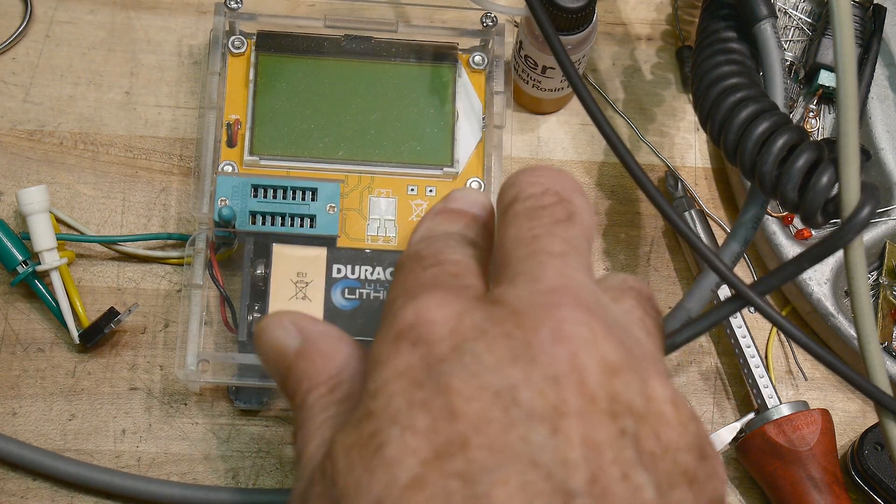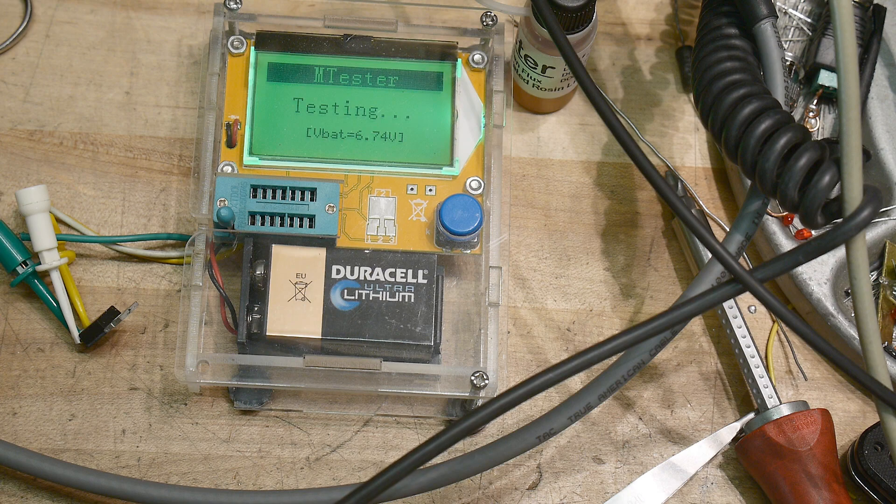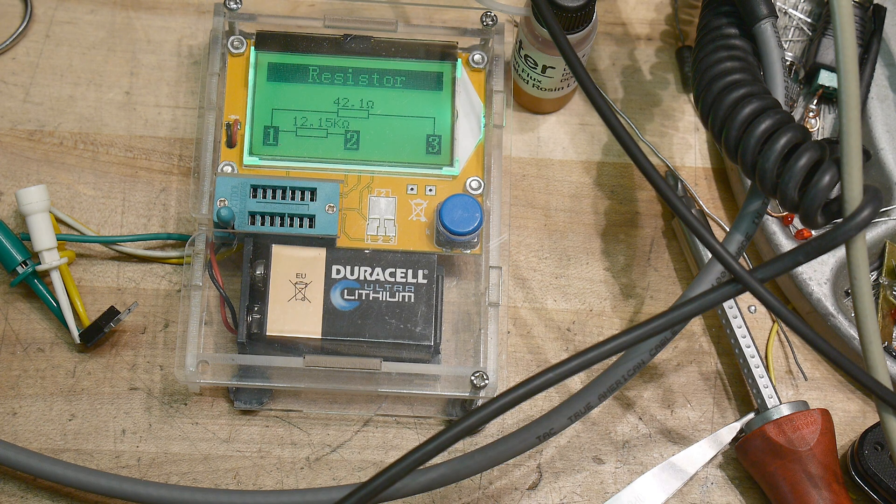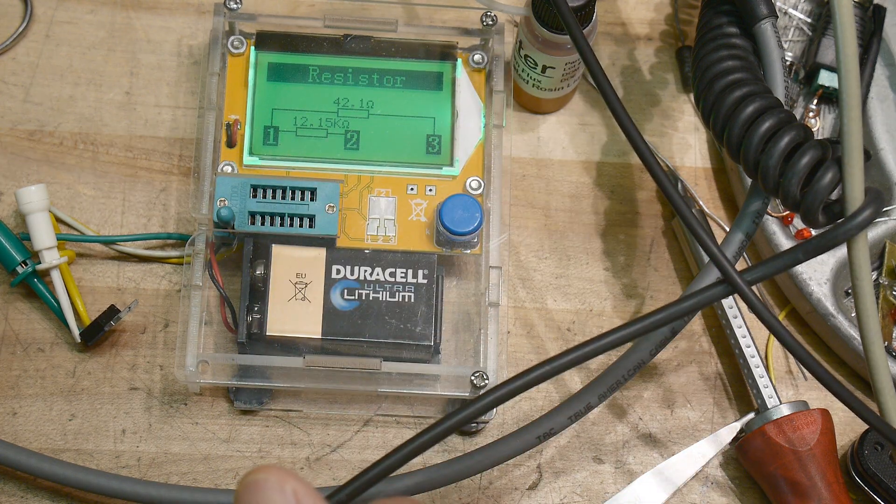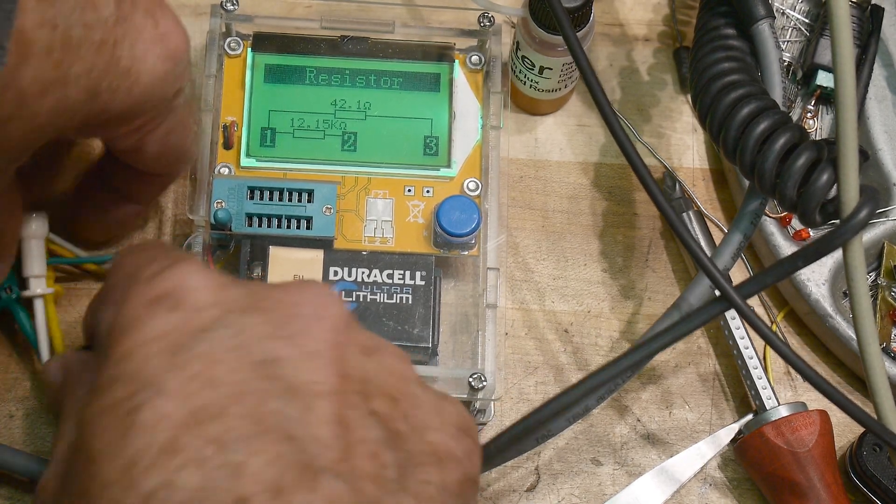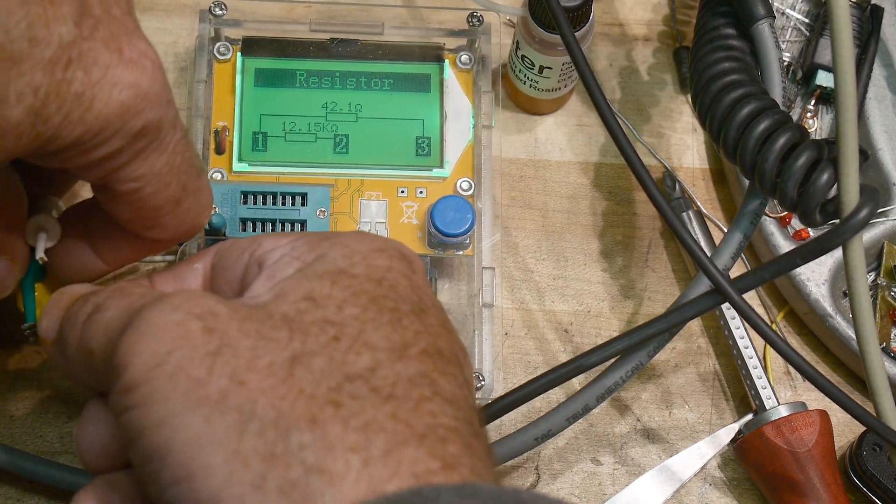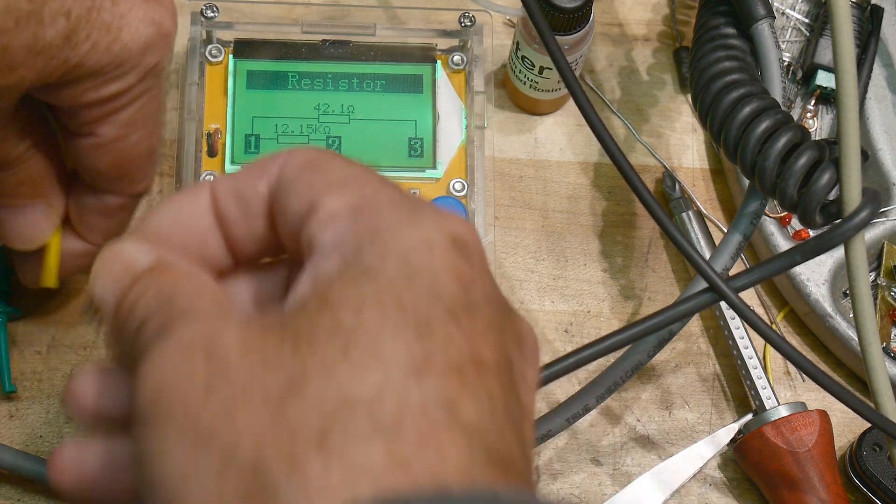All right, let's turn it on and it says it's a transistor NPN. No, it's some resistors. 42 ohms, that's interesting, and 12K. Hmm, anyway, it's dead. That one's dead. Let's test the other one.